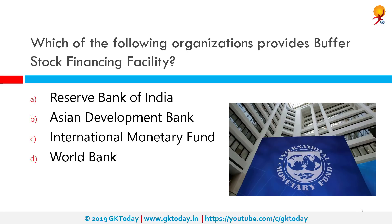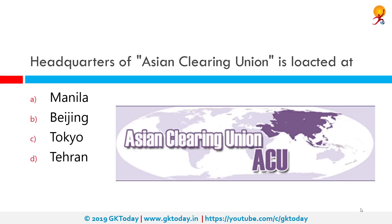Which among the following organizations provides buffer stock financing facility? It is provided by the International Monetary Fund, which set up this facility in 1969 to provide financial assistance to members with a temporary balance of payments need arising from contributions to buffer stocks established under approved international commodity agreements. The headquarters of the Asian Clearing Union is located where? The correct answer is Tehran.